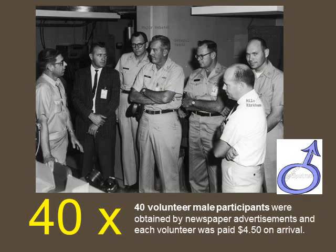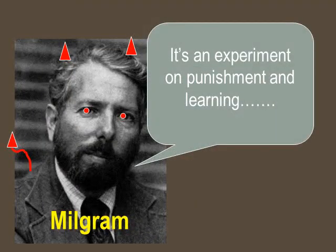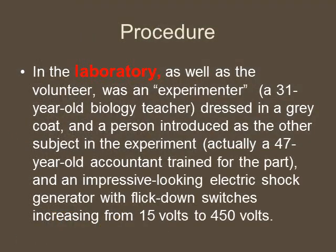Milgram recruited 40 volunteers through a volunteer sample — he placed an ad in a newspaper and agreed to pay each participant $4.50 on arrival. His original experiment was a lab experiment involving an experimenter, a 31-year-old biology teacher dressed importantly in a grey lab coat. The genuine participant was used as the teacher, while a confederate — someone in on it — acted as the learner.